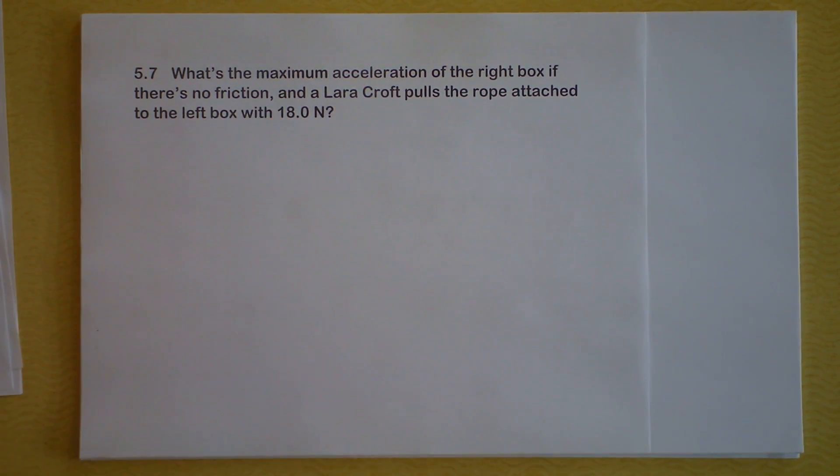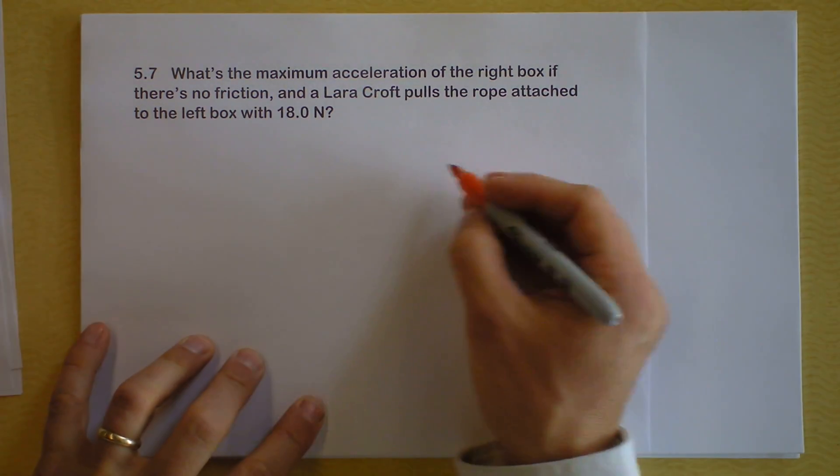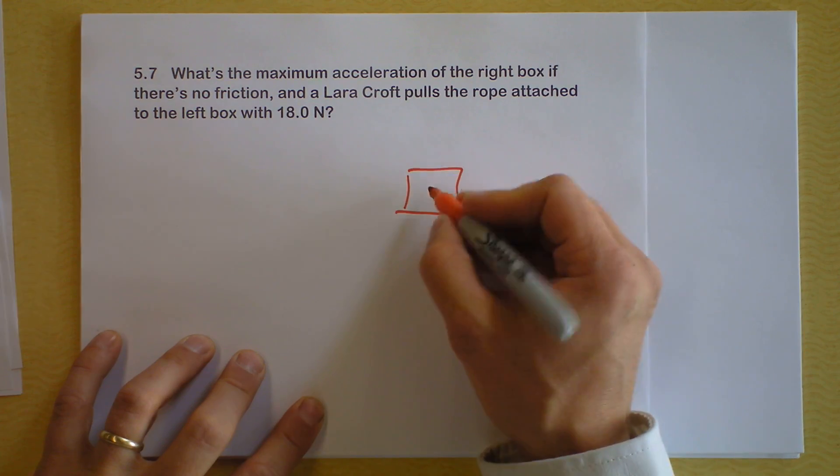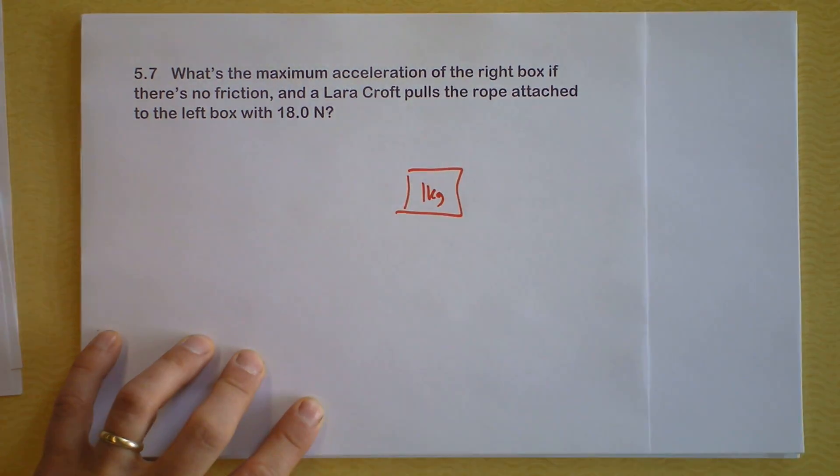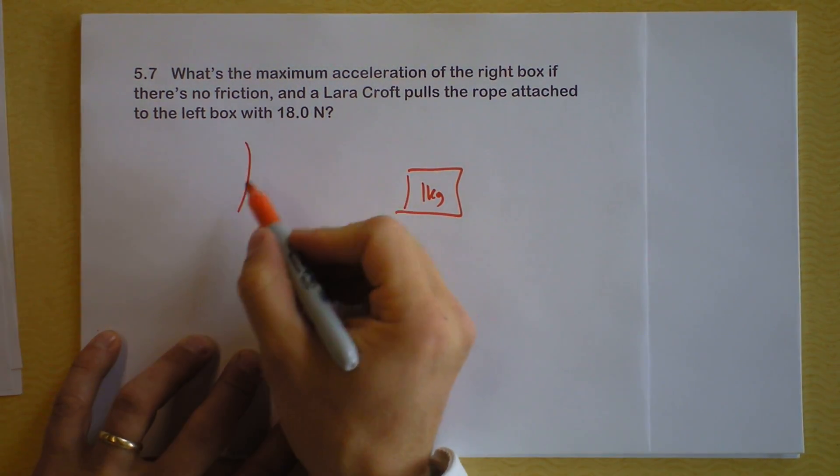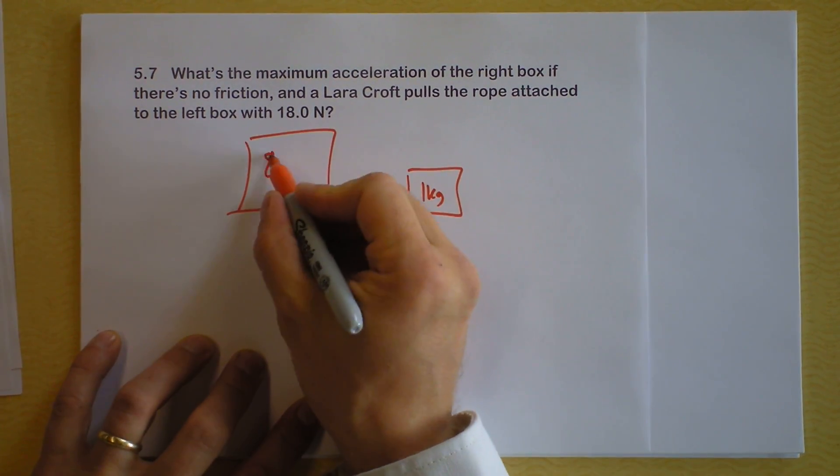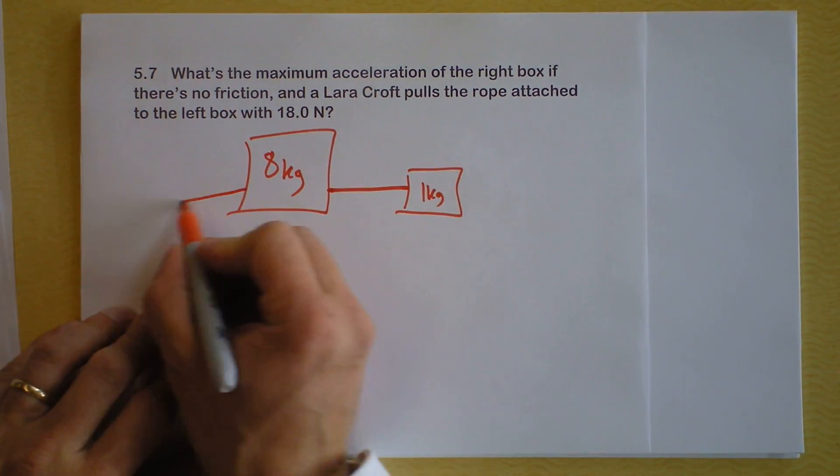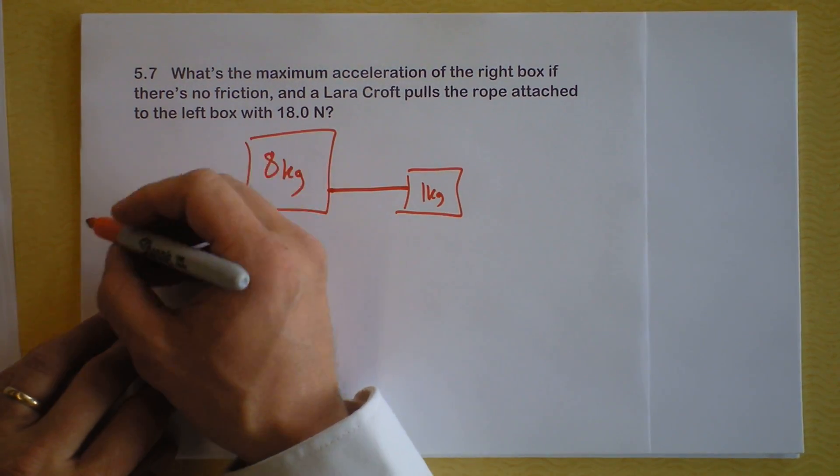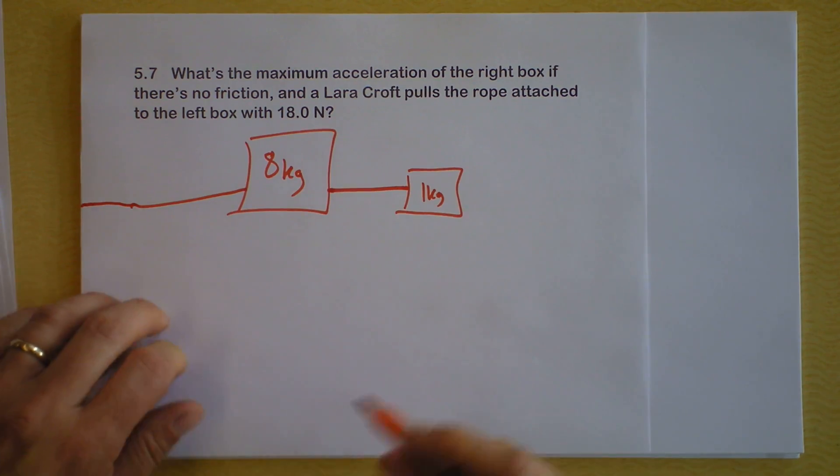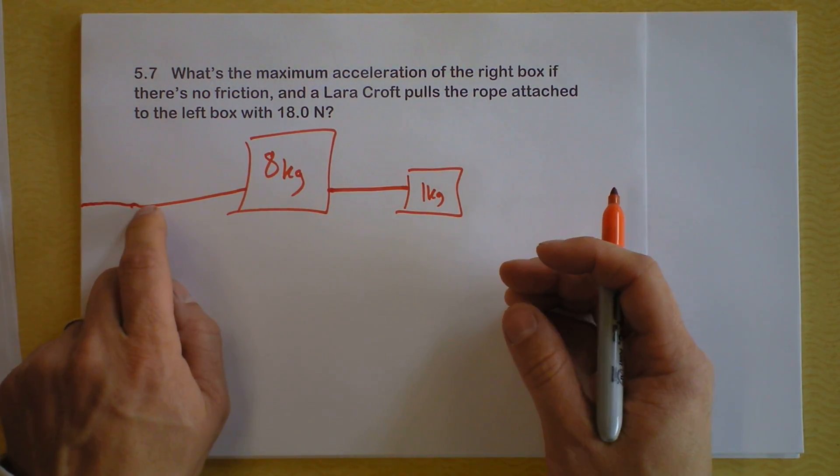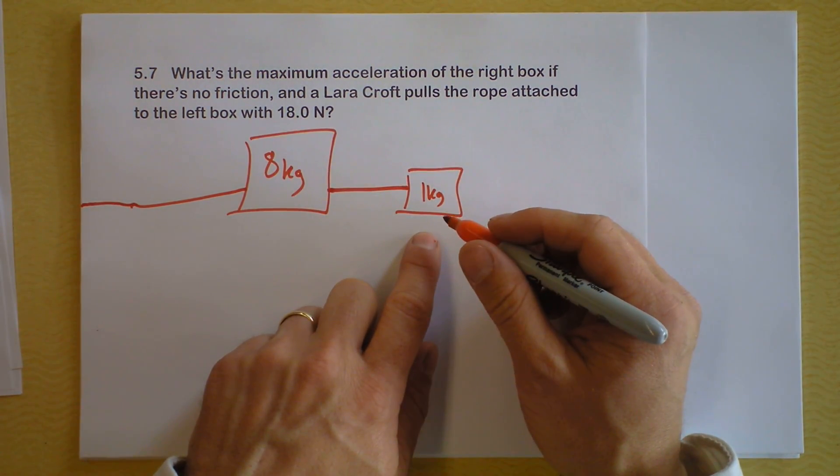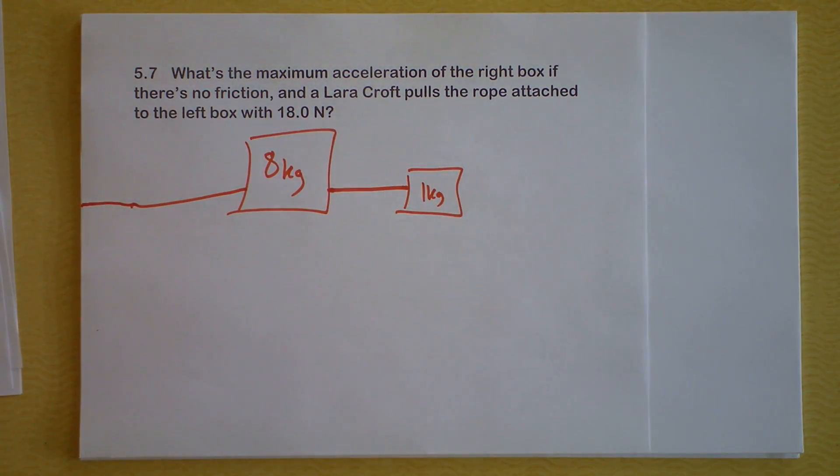The maximum acceleration of the right box. Which box? Well, here's a box, and I'm going to call this box a mass of, let's call it one kilogram, right? And this other box has a mass of eight kilograms, and they're attached by a rope, and there's another rope here. Lara Croft is actually off-screen pulling this rope with 18 newtons. So the question is, what's the acceleration of this box right here? And that's all I've got.